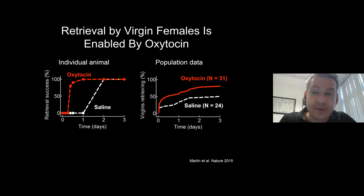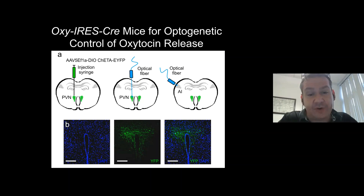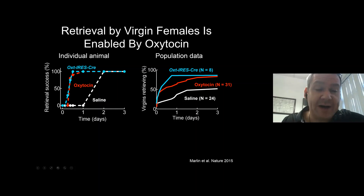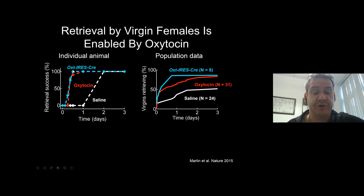When I started my lab, Brad Lowell had just produced important Cre lines — oxytocin-Cre animals. We used those animals to express channelrhodopsin in the oxytocin neurons and implanted an optical fiber over the PVN to release endogenous oxytocin potentially throughout the whole brain. We do optical stimulation just during the 20-minute testing period. Animals receiving optogenetic stimulation also retrieved at a much earlier time point than saline counterparts — about seven out of eight animals retrieved within the first day.